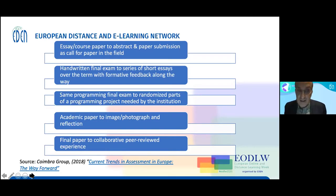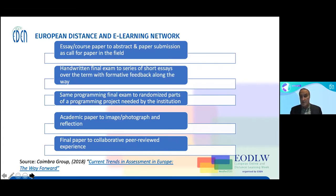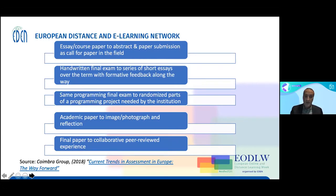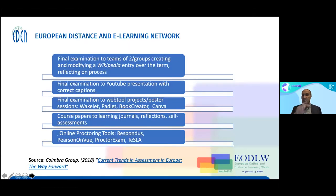For computers and programming, instead of a final exam, find out what programming project your institution actually needs done and have the students do it — a real-world project. Change the academic paper in healthcare or medicine to having students pick an image, reflect on what they're seeing, and relate it to their field. The final paper could also change to a collaborative group peer review: your draft is ready by week eight, three or four students comment, and then you turn in the final later.